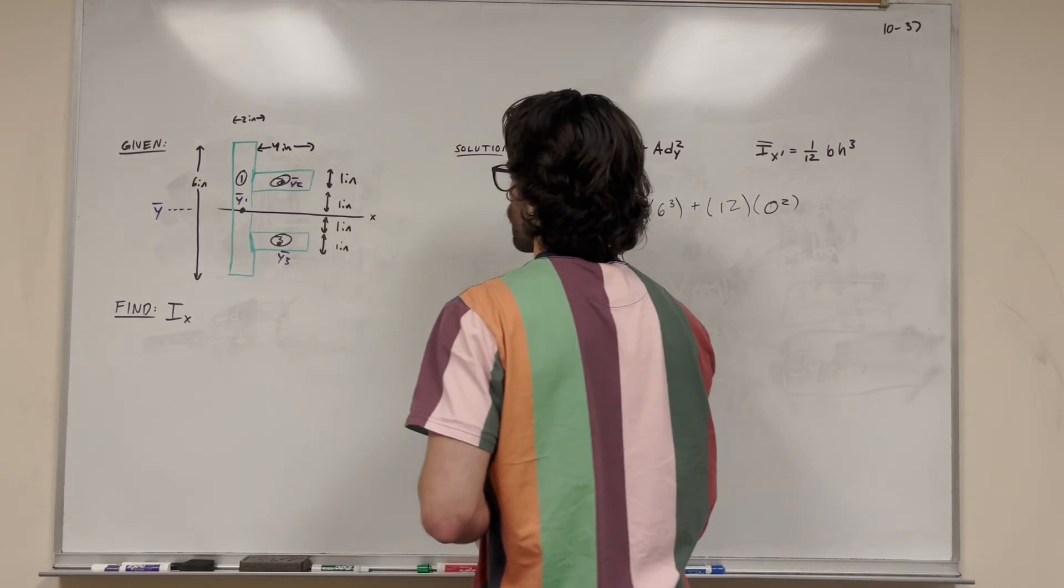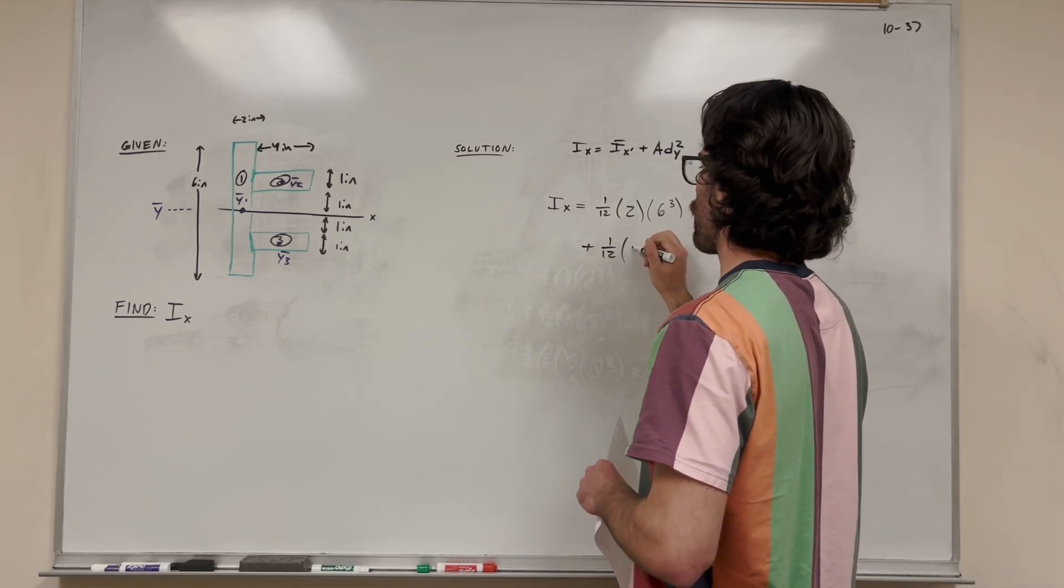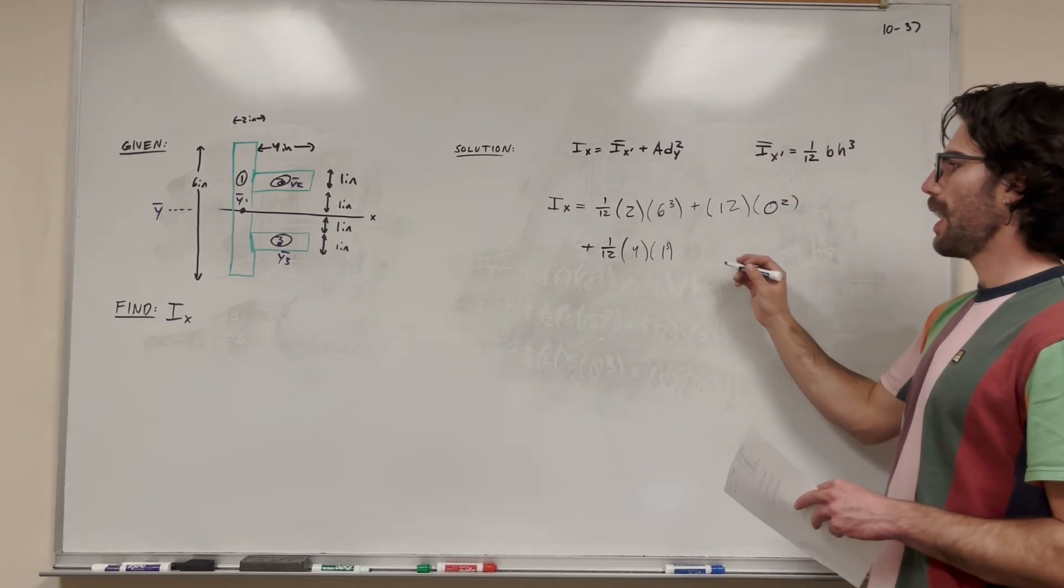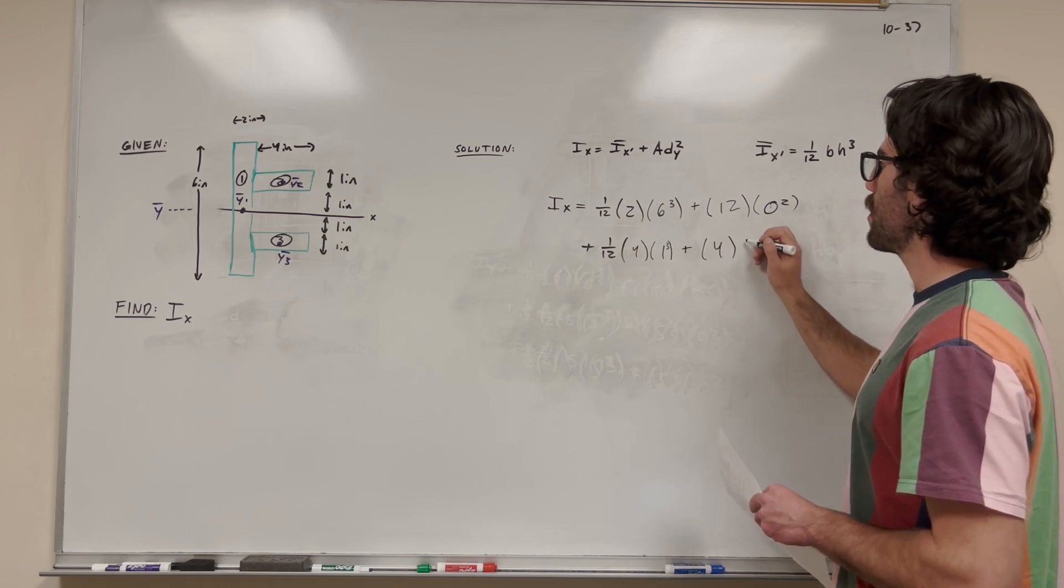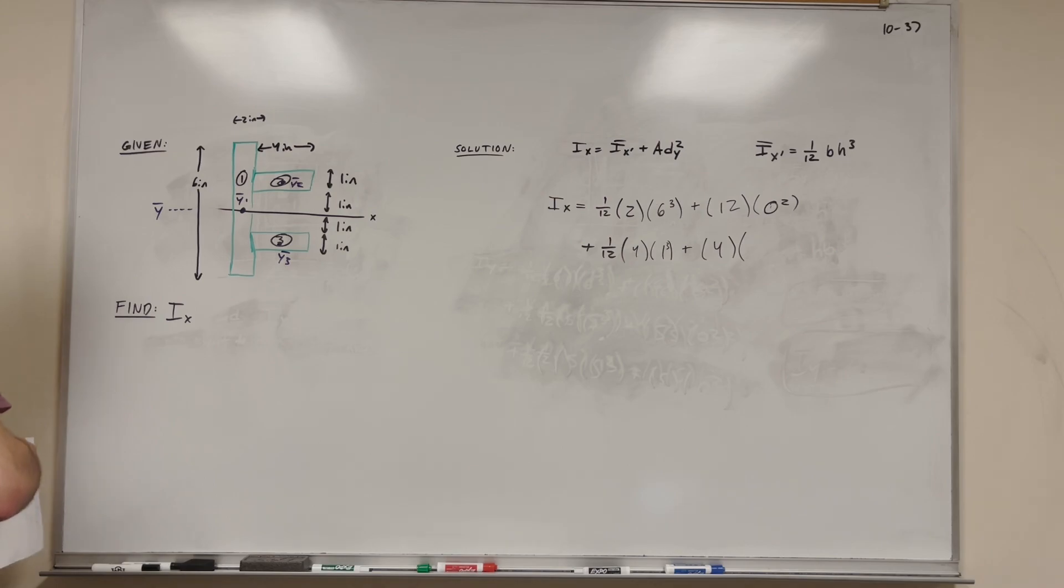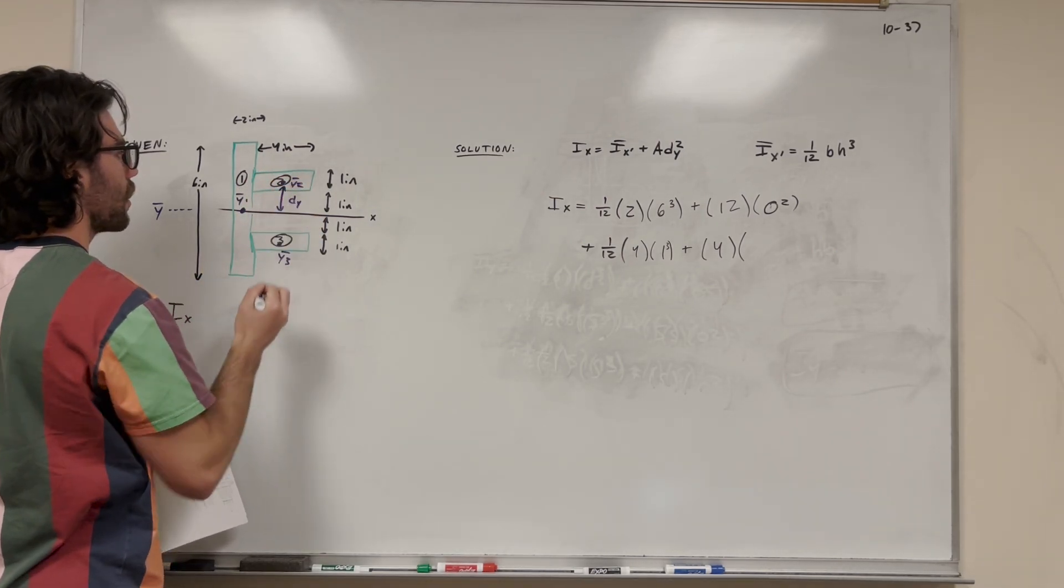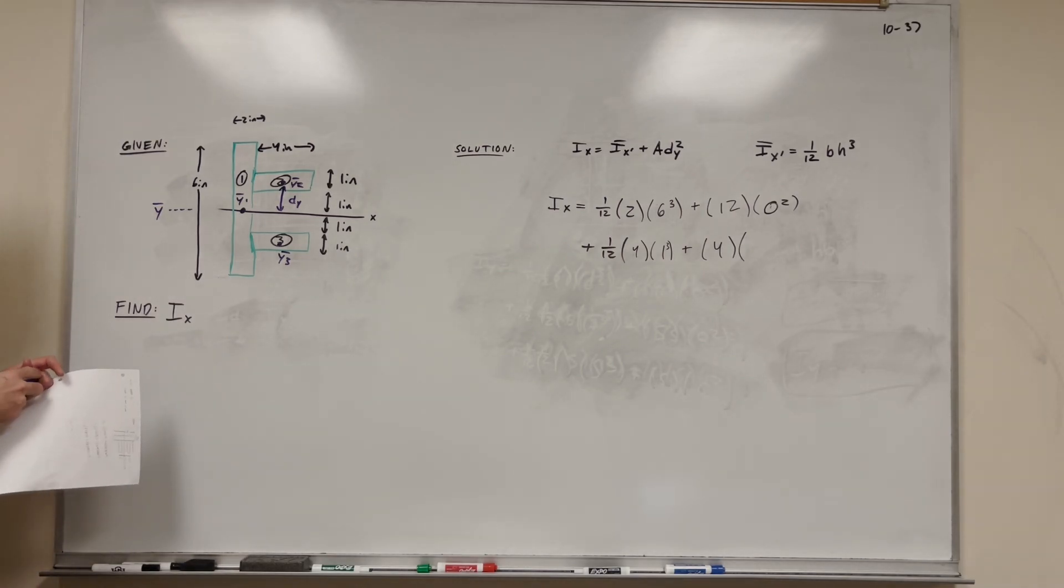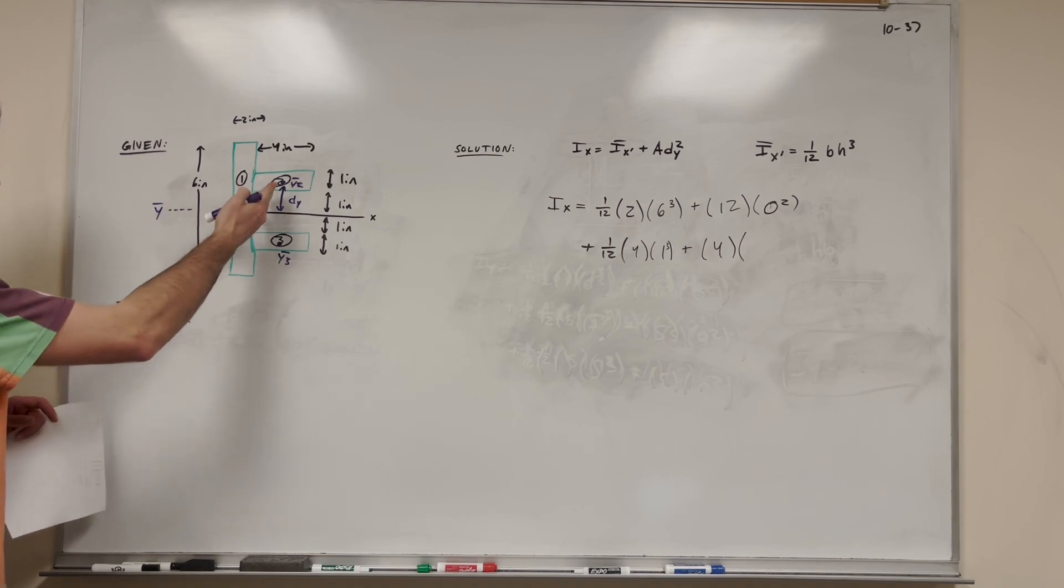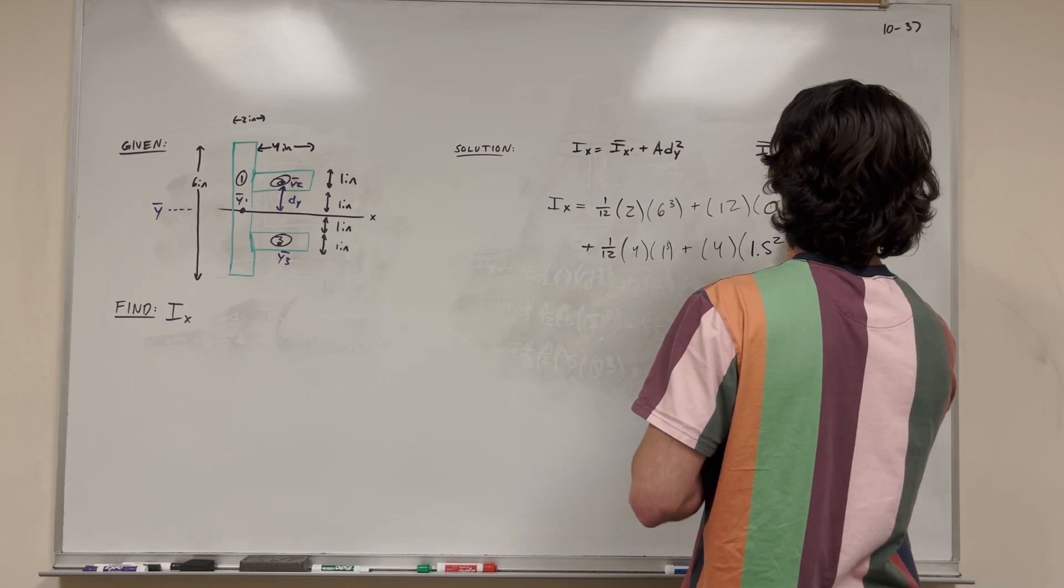So, for shape number two, we have the base. We're going to run through this equation again. 1-12 base. The base is four inches, and the height is one inch. So, one cubed. Then, we're going to add it to its area. Its area is four inches squared. Then, we're going to multiply it by distance y. So, this time, it is going to have a distance y. The distance that we're looking for is the distance from here to here. And this is distance y. So, not too hard to tell that distance is going to be one inch plus half of an inch, because this rectangle's center of mass is halfway of its height. We're going to actually just go ahead and put 1.5 squared there.